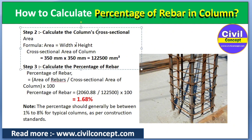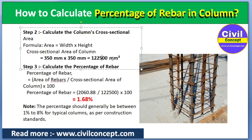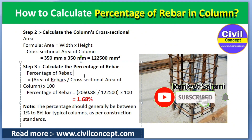Now we will calculate the cross-section area of the column. We simply multiply width by height: 350mm × 350mm = 122,500mm². This is the cross-section area of the column.